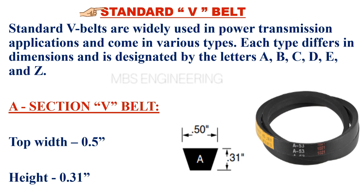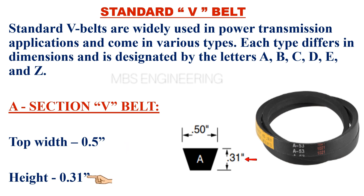We will learn and understand the standard V-belts. We will understand the A-section V-belt. The top width of the A-section V-belt is 0.5 inches. The height of the A-section V-belt is 0.31 inches. Please take a look at the figure that shows section A V-belt.